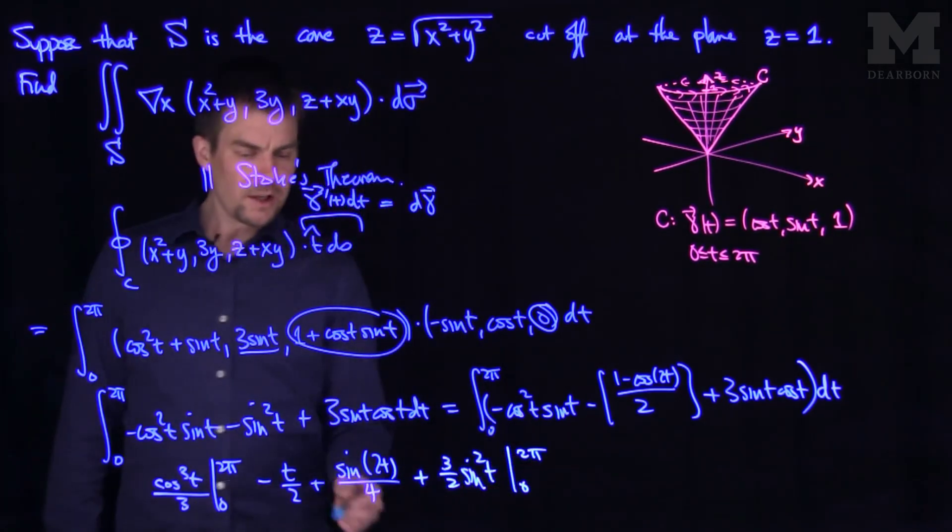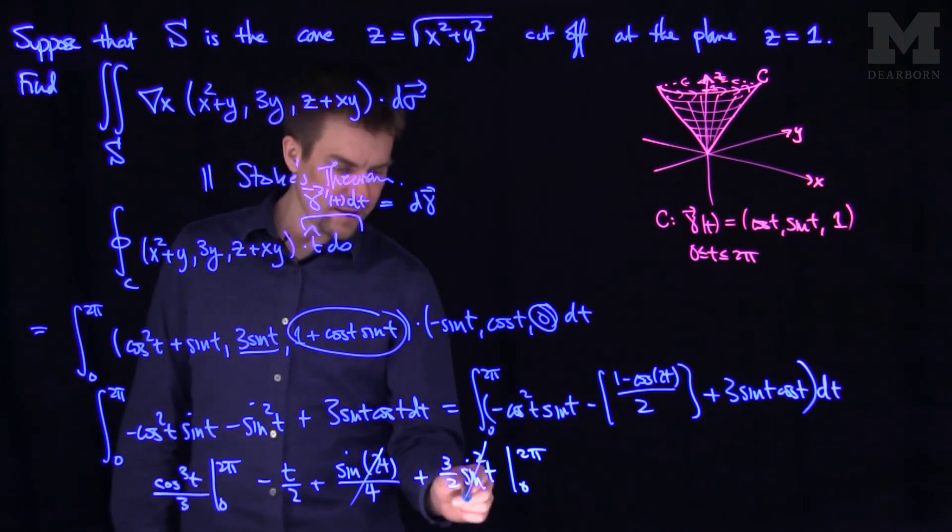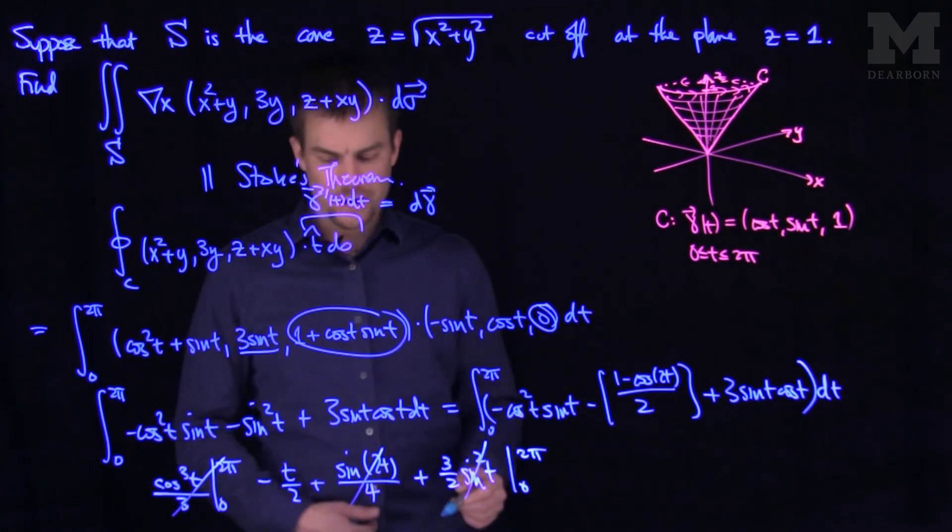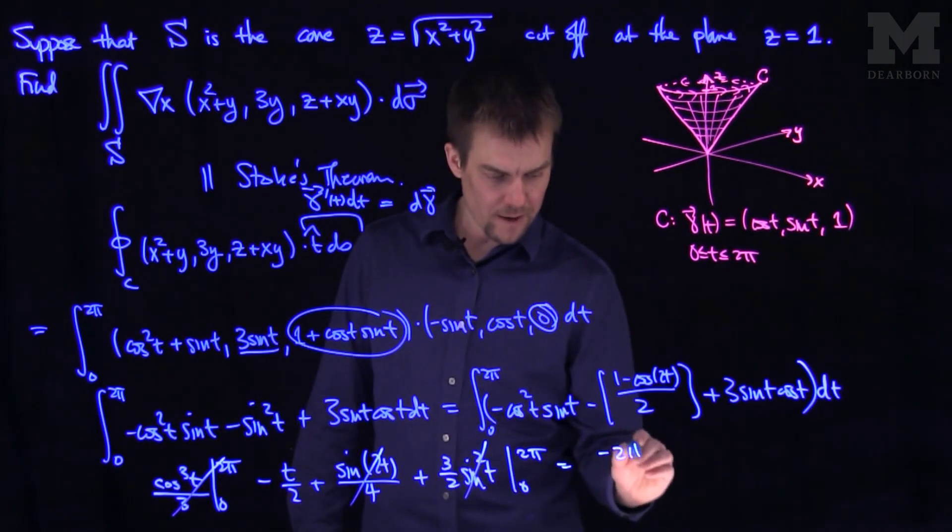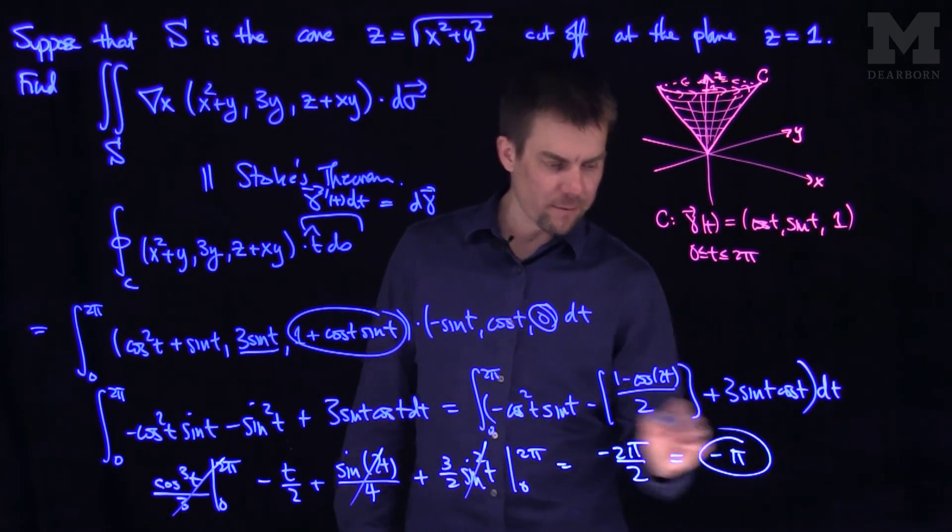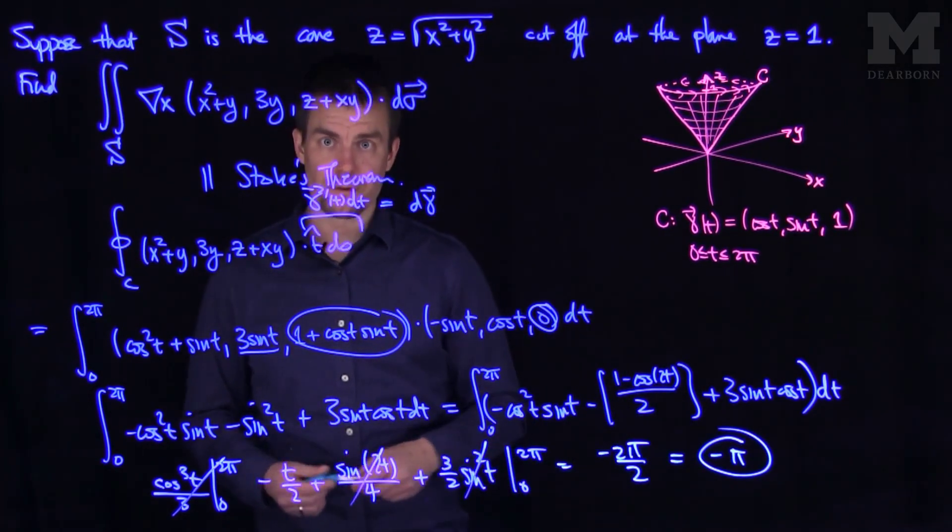And now each of the trigonometric terms is going to vanish when you plug in 0 and 2 pi because of the periodicity. And so what's left over here is I'm going to have negative 2 pi over 2 minus 0. So this will be negative pi as your flux around the closed curve.